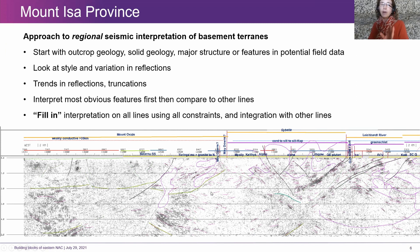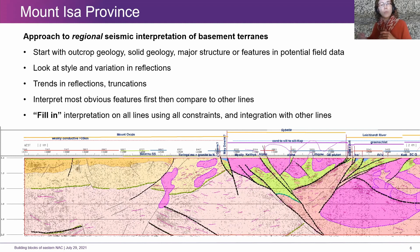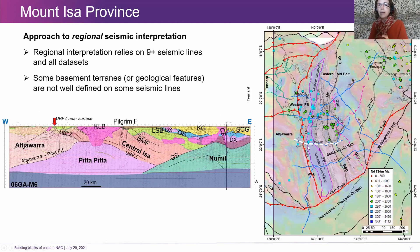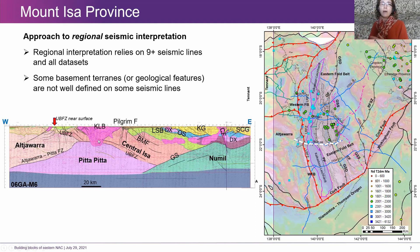This is something I feel very strongly about: whether you're working in cross section or plan view, you really need to go to that next step and fill in your interpretation using all the constraints. Otherwise you won't really understand — or you will find features you hadn't considered — when you try and make that full color image. This is an example — the M6 line with its location highlighted in white. I want to emphasize from the start that these nice colored images you're seeing as the final product aren't based solely on that one line. It's integrated from all nine lines, from the MT data, and all the other data, so in some cases a given basement terrain might not be well defined on a seismic line but by building that regional understanding we can make that interpretation.